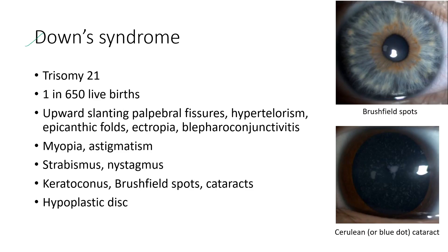Next is Down syndrome. It occurs due to trisomy 21, with an incidence of 1 in 650 live births. The ocular features include upward slanting palpebral fissures, hypertelorism, epicanthic folds, ectropion, and blepharoconjunctivitis. Other features include myopia, astigmatism, strabismus, nystagmus, keratoconus, Brushfield spots, and cataracts — including the cerulean or blue-dot cataract shown in this picture. There can also be a hypoplastic disc.